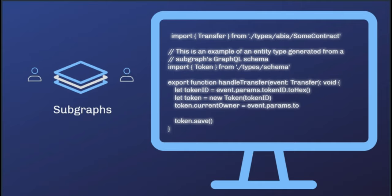These indexes, which are called subgraphs, can then be queried with a standard Graph application programming interface (API). In the future, the hosted service will evolve into a fully decentralized protocol with the same capabilities. Both are backed by the open source implementation of Graph Node.